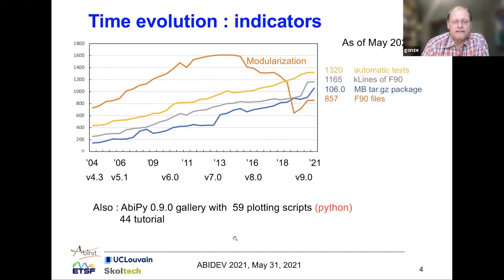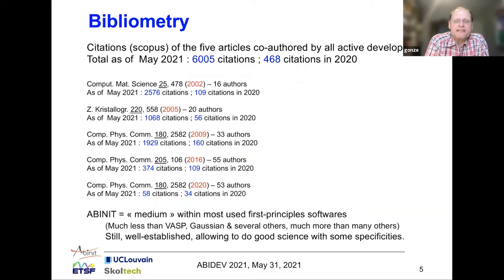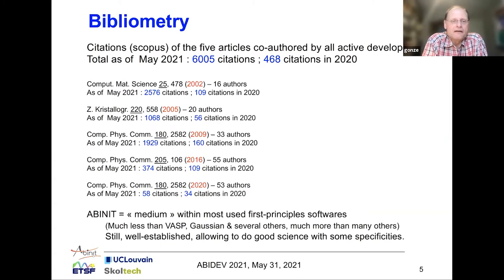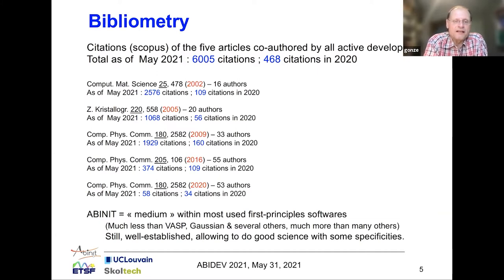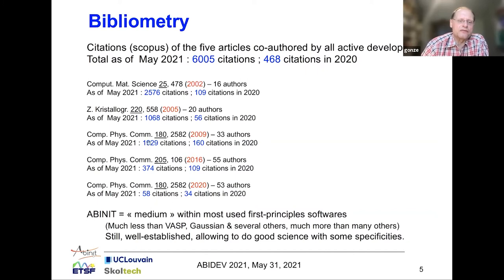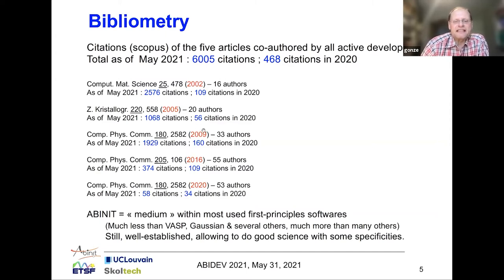There are 44 tutorials in the Abinit package. At the level of bibliometry, we have published altogether five articles co-authored by all active developers of Abinit — the first in 2002 and the last just after the 2020 developer workshop. A couple of these papers are very widely cited: one with 2,500 citations and another with nearly 2,000. The more recent publications are still accumulating citations and are very heavily cited nowadays.